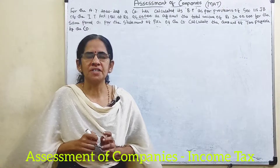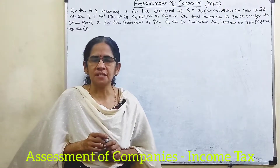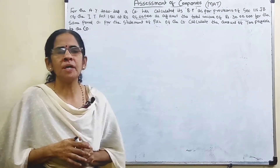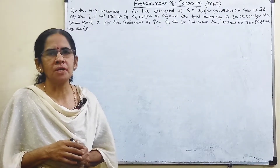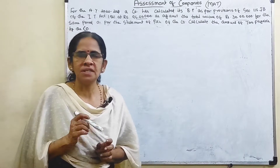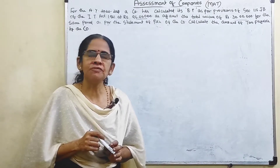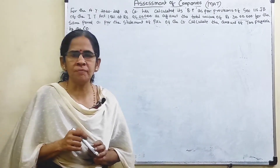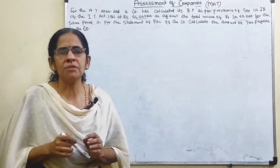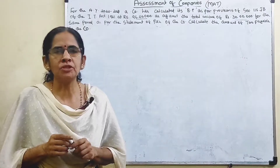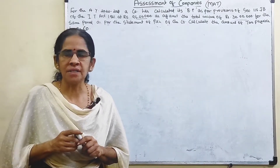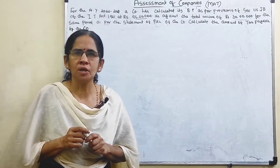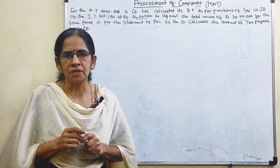Under this section, it says that if the tax payable by a company on its total income is less than 15% of book profit, such a company is liable to pay tax at the rate of 15% on its book profit.